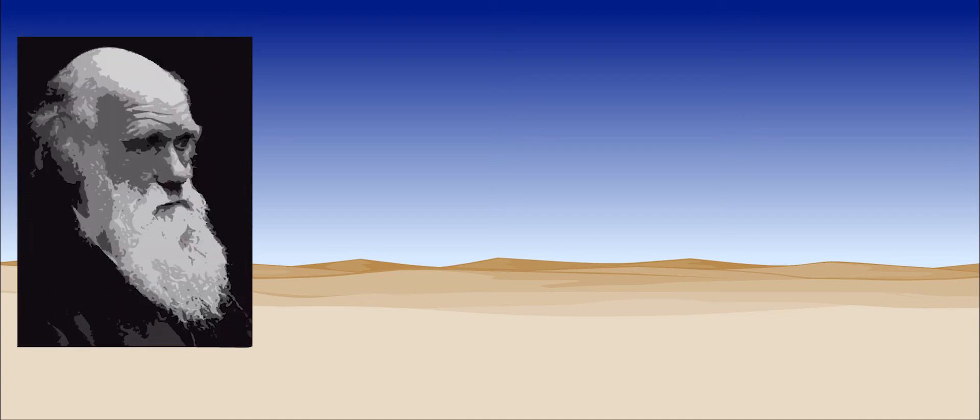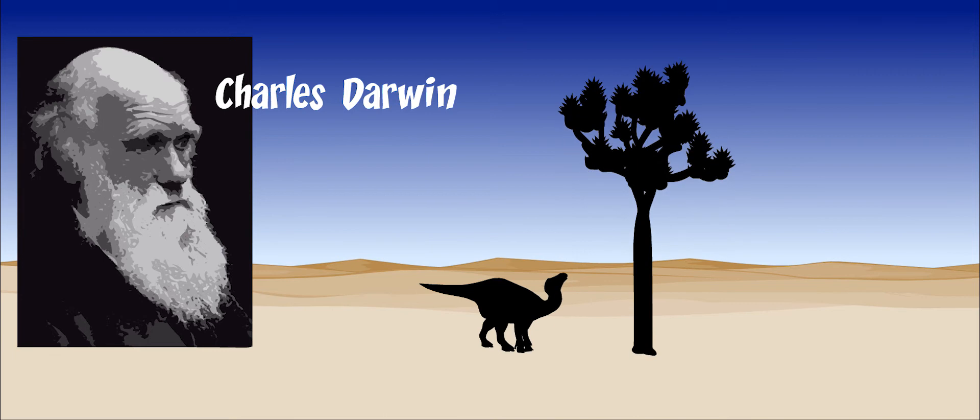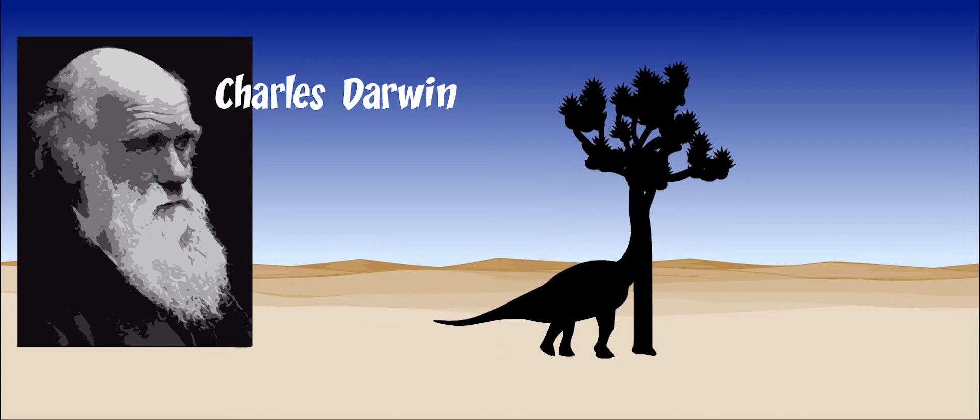A long time ago, a man named Charles Darwin explained that creatures change slowly over time to survive as the world around them changes. These changes over time are called evolution.